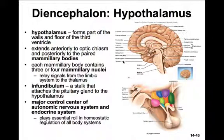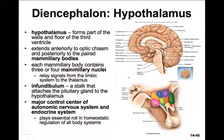Now let's move into the hypothalamus. The hypothalamus forms part of the walls and the floor of the third ventricle. It extends anteriorly to the optic chiasm, where the optic nerves cross right beneath the brain, and extends posteriorly to the paired mammillary bodies. Each mammillary body contains three or four mammillary nuclei involved in relaying signals from the limbic system to the thalamus. The infundibulum is the stalk that attaches the pituitary gland to the hypothalamus.